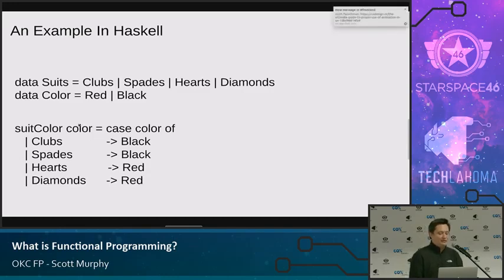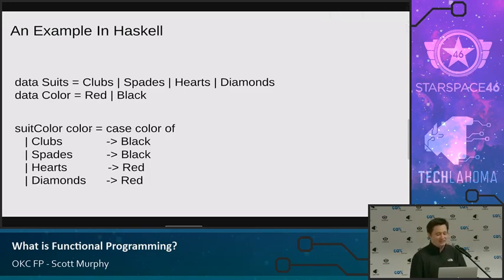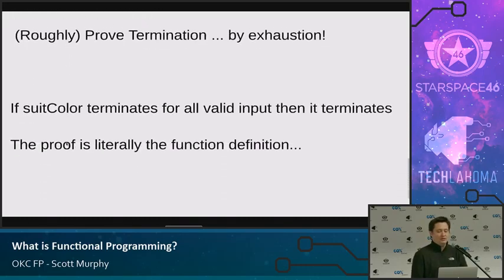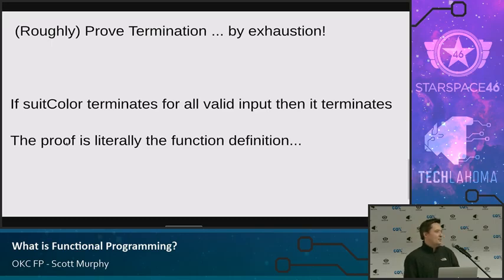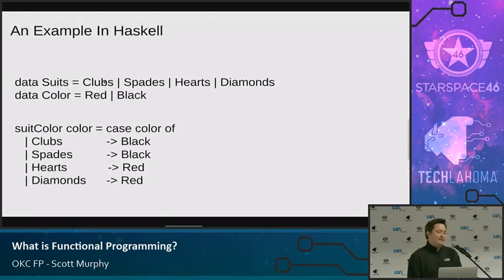The input is going to be suit — this should say suit. It can't prove your naming is right, it can only prove your structure. The case of suit is going to either be a club, a spade, a heart, or a diamond. There can be no other input because we've defined our input, and there can be no other output because we've defined our output. The proof is unbelievably easy — it's just a proof by exhaustion. You have all your inputs, you simply work through every single input and then you have all your outputs.